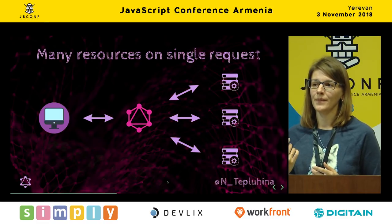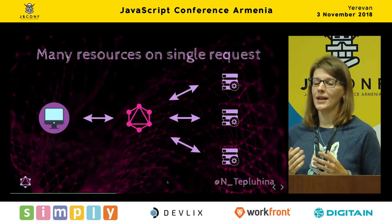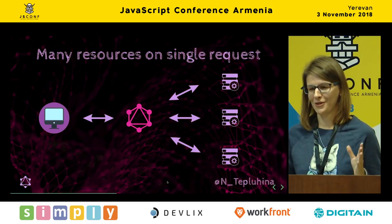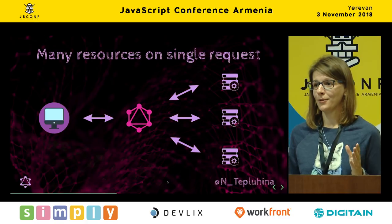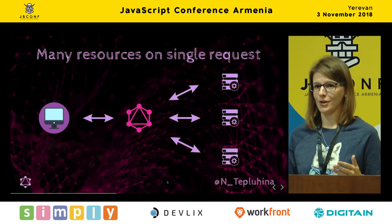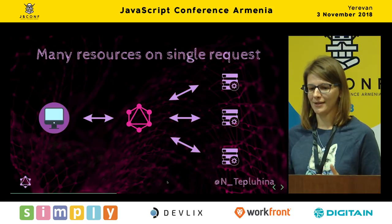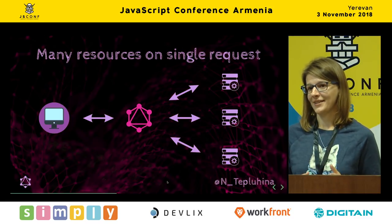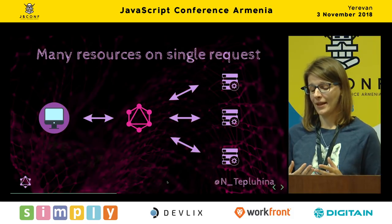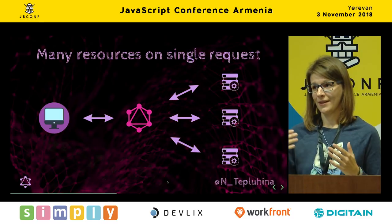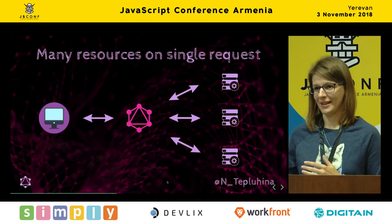Imagine you have a project with a huge REST API. You cannot just simply migrate to GraphQL or get rid of REST and start from scratch. But you can create a GraphQL wrapper that fetches data from the REST and forms it into GraphQL. So you can do a nice, smooth migration.